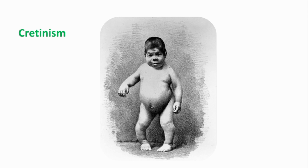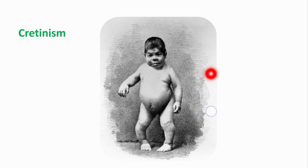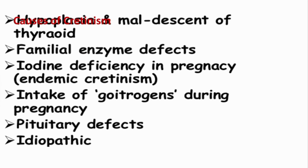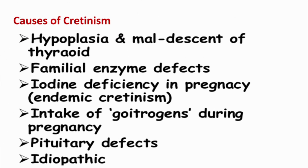Cretinism is hypothyroidism during fetal life, infancy or childhood. Its most characteristic signs and symptoms are dwarfism and mental retardation. Unless cretinism is treated within a few weeks after birth, mental growth remains permanently retarded. Causes of cretinism include hypoplasia and maldescent of the thyroid, familial enzyme defects involved in the synthesis of thyroid hormones, iodine deficiency during pregnancy, intake of goitrogens during pregnancy, pituitary defects affecting TSH secretion, and sometimes there is no known cause.